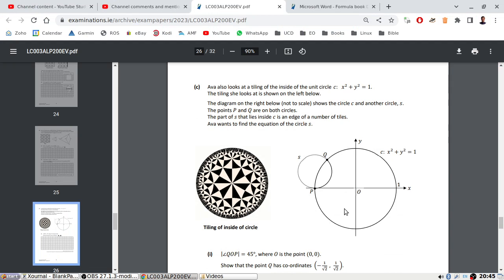Ava also looks at tiling of the inside of the circle. The diagram on the right, not to scale, shows the circle C and another circle S. Points P and Q lie on the circles. Part S that lies inside C is the edge of one number of tiles. Eva wants to find the equation of circle S.